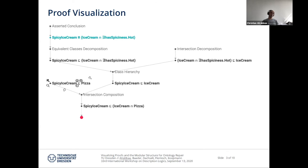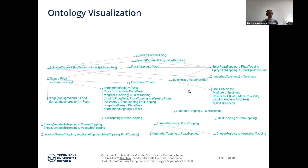Looking at the proof, we notice that spicy ice cream is a pizza, which looks a bit strange. We can press a button which takes us to the ontology view where we can see the diagnoses and their impact. This is the atomic decomposition of our pizza ontology — basically a compact structure on the axioms of the ontology that is used in module extractions. We use the atomic decomposition to show the impact of axiom removal on the modular structure of the ontology.